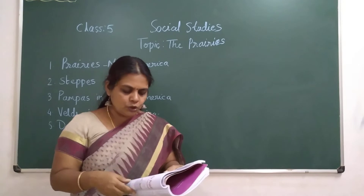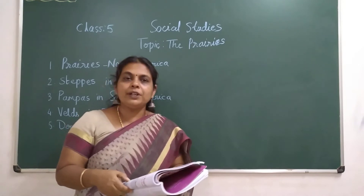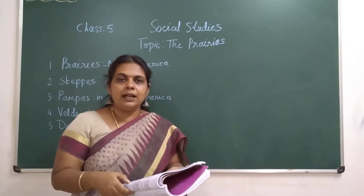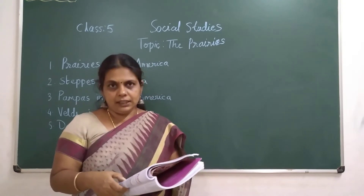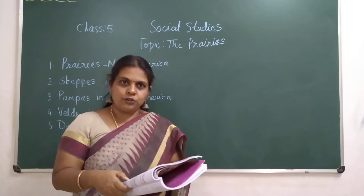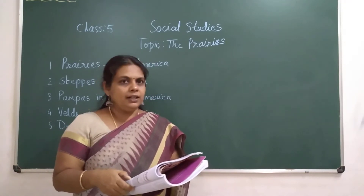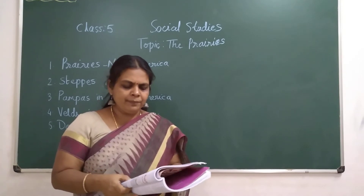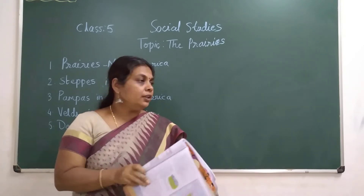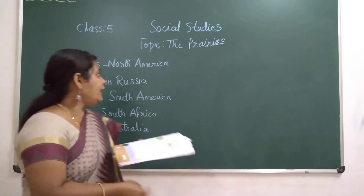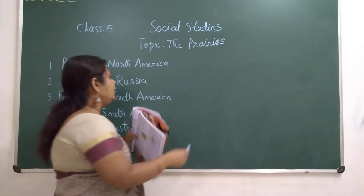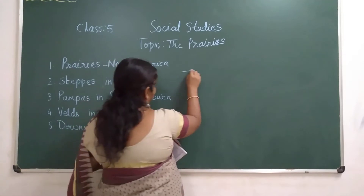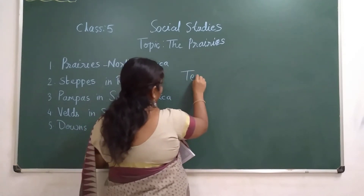Another zone is between the Tropic of Capricorn and the Antarctic Circle. You should know the degrees also. So they are located in the temperate zone.